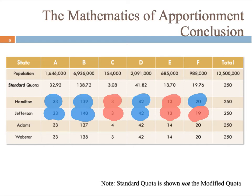The real unfair thing about Jefferson's method is that upper quota violations can be produced. With state B's standard quota of 138.72, they should only have 138 or 139 seats, but they were given 140 in Jefferson's method — so that's an upper quota violation.